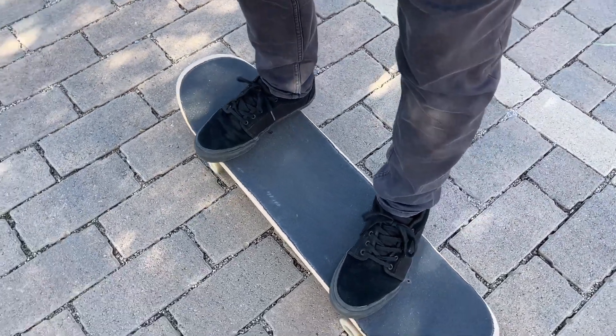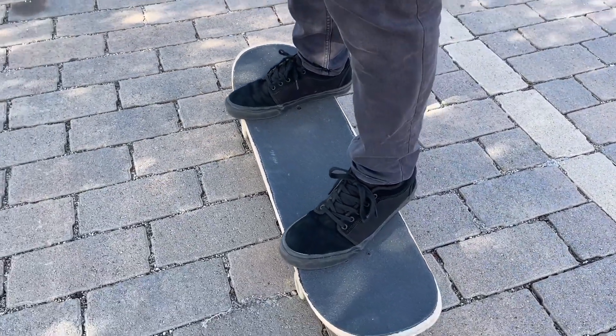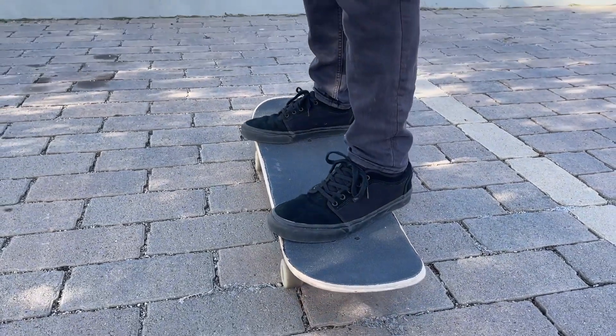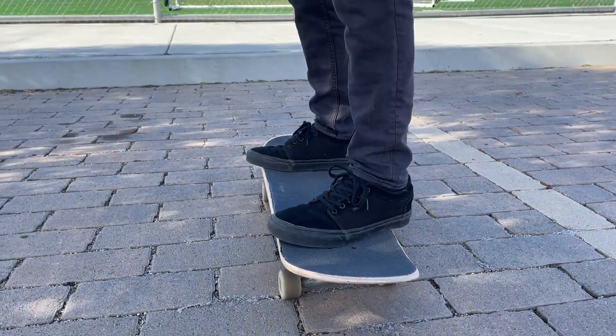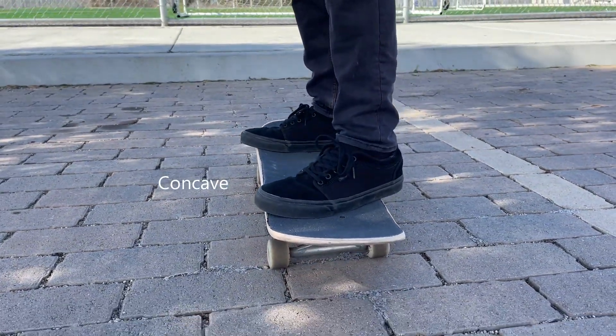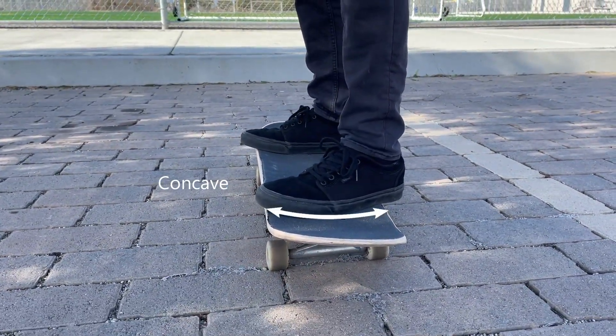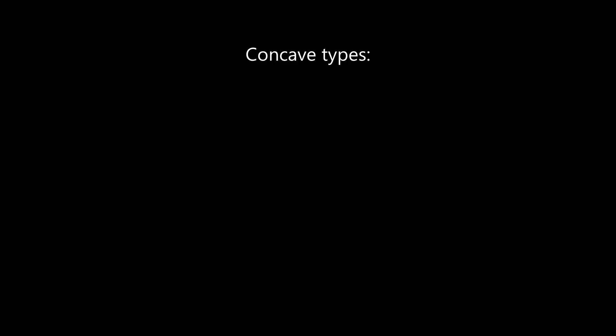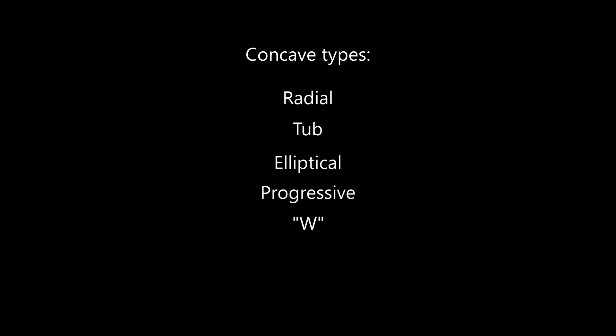Concave refers to the curvature of the board between the kicks of the board. There are different types of concave a board can have, including radial, tub, elliptical, progressive, and w. Or it can have no concave at all and simply be flat.